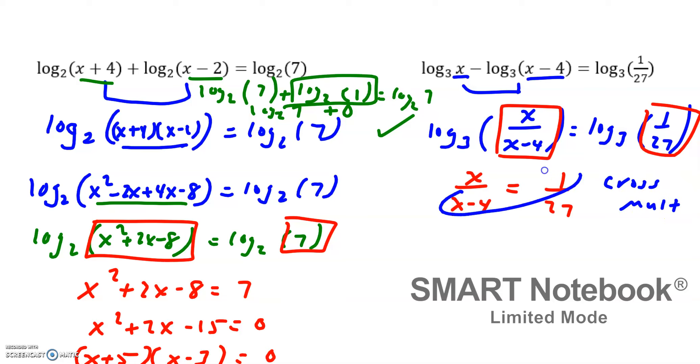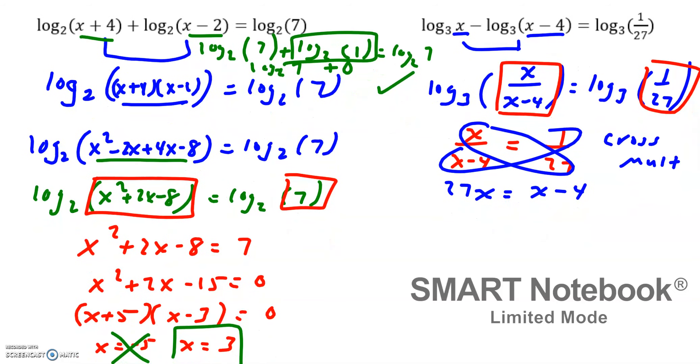So you would get 27x equals 1 times x minus 4, which is just x minus 4. You then can get the x's on the same side. Subtract this over. 26x equals negative 4.